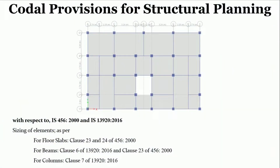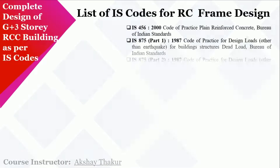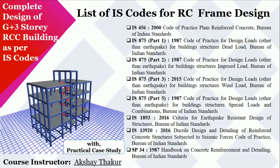In the course, first of all we'll calculate the preliminary section sizes with respect to IS 456-2000 and IS 13920-2016. Along the way, we'll first convert our architectural plan into the structural framing plan to draw our structure in the computer software ETABS.